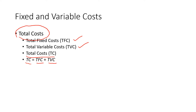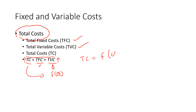Since total fixed cost is not a function of quantity whereas total variable cost is a function of quantity, the total cost automatically becomes a function of quantity. If you produce more quantity, total variable cost increases and consequently total cost increases.